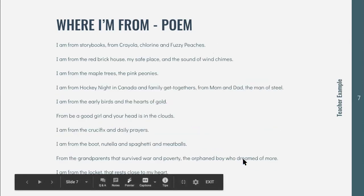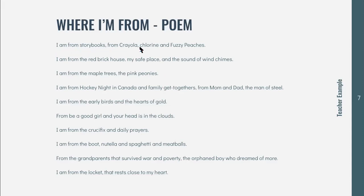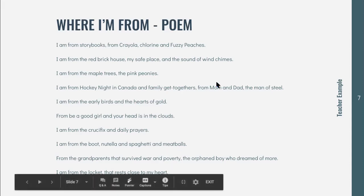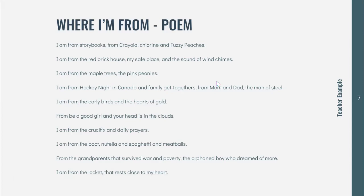Let me show you my example of Where I'm From. I am from storybooks, from Crayola, chlorine and fuzzy peaches. I am from the red brick house, my safe place, in the sounds of wind chimes. I am from the maple trees, the pink peonies. I am from hockey night in Canada and family get-togethers, from mom and dad, the man of steel. I am from the early birds and the heart of golds. From be a good girl and your head is in the clouds. I am from the crucifix and daily prayers. I am from the boot, Nutella and spaghetti and meatballs. From the grandparents that survived war in poverty, the orphan boy who dreamed of war. I am from the locket that rests close to my heart.